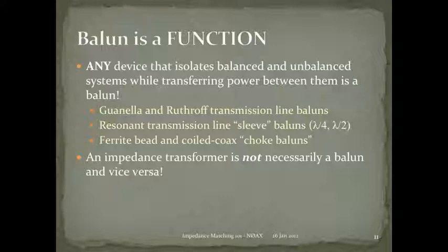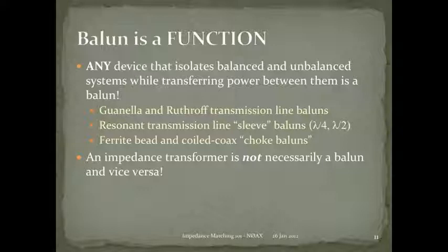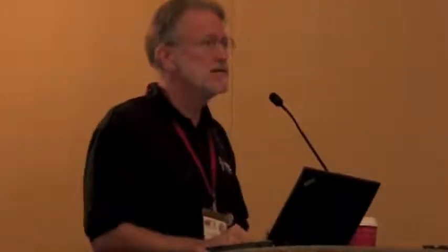There are different types: transmission-line baluns wound around cores, resonant sleeve baluns with a half-wavelength section, the Q3Q balun, ferrite beads on the outside of coax that block current on the shield, or simply coiling your coax to make the outside of the shield into an inductor. All of those are baluns. Importantly, an impedance transformer is not necessarily a balun, and a balun is not necessarily an impedance transformer.